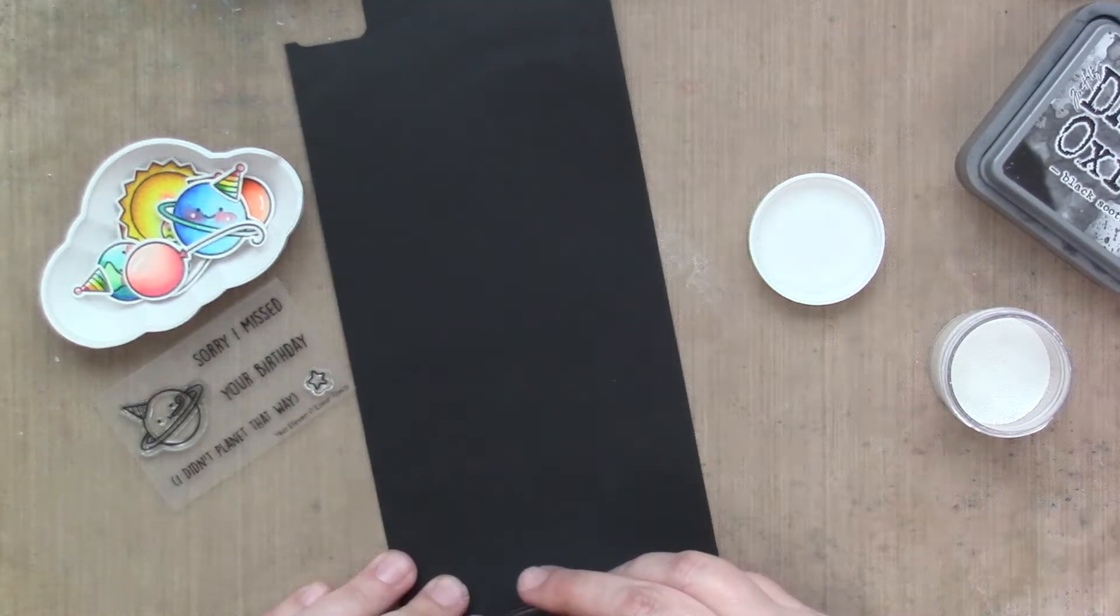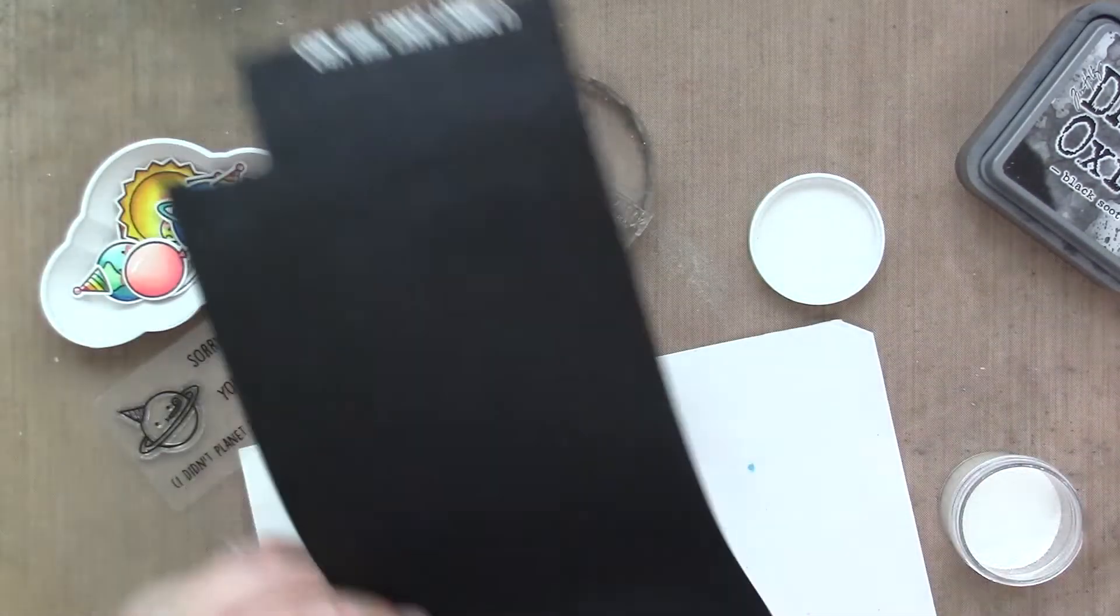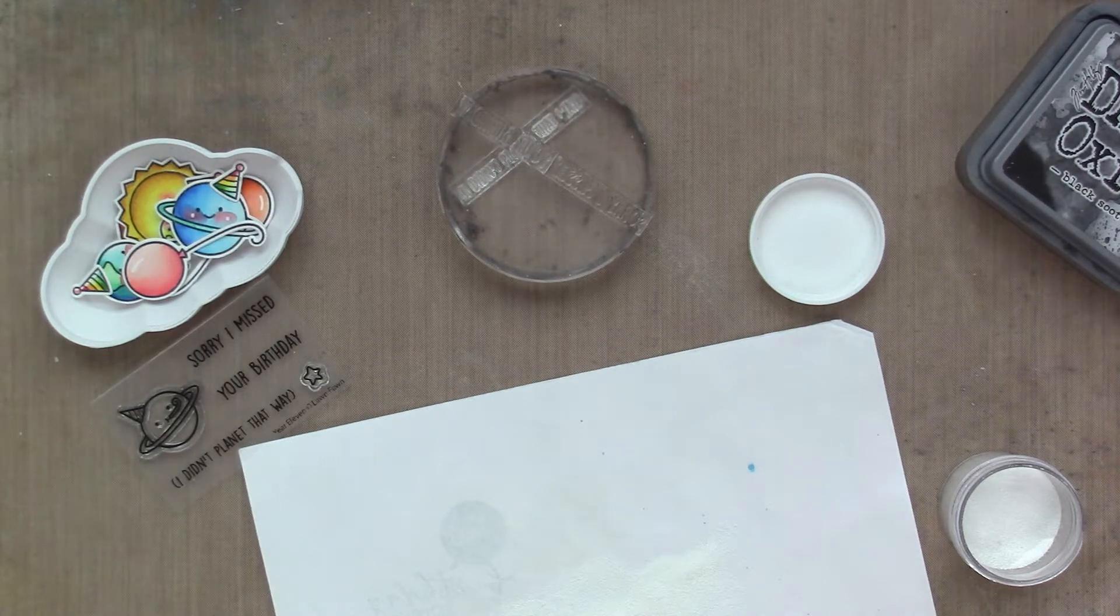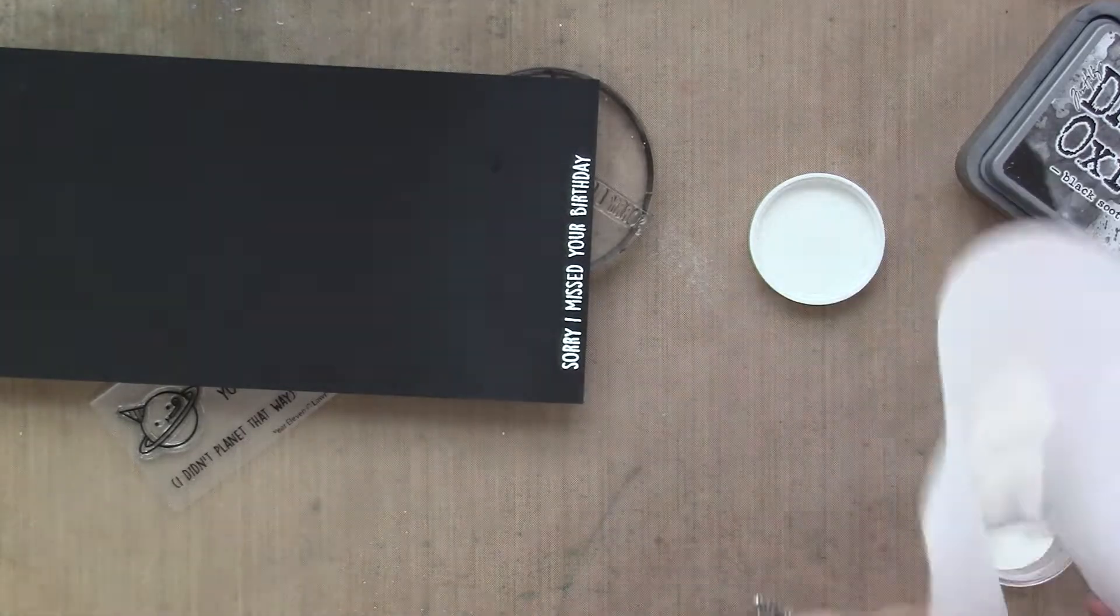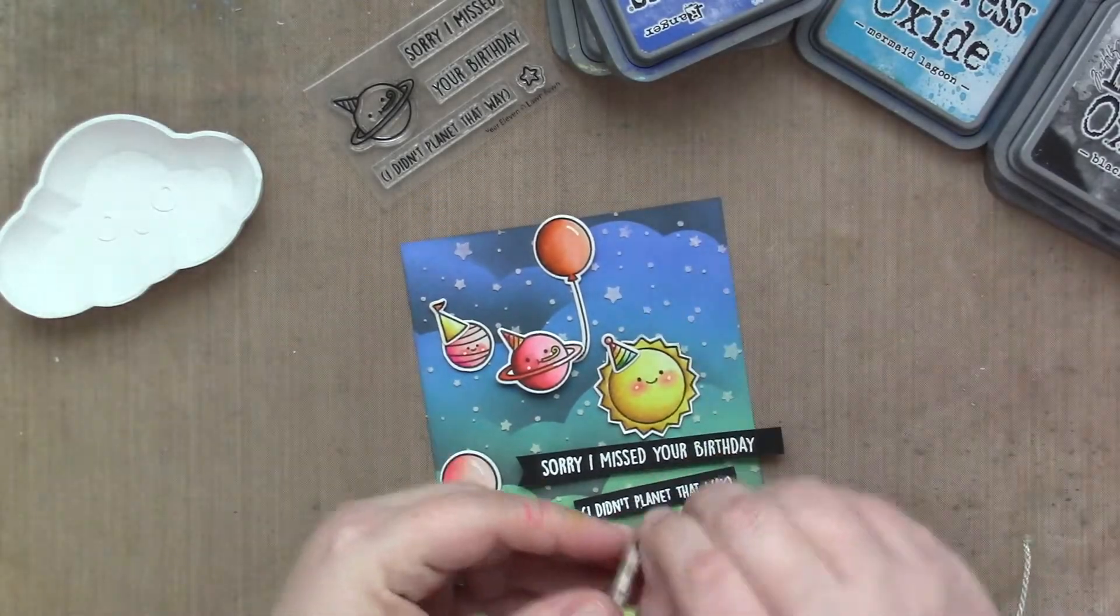And then I'm heat embossing the other part of the sentiment at the very tippy top. The reason I did this was because I cannot line things up straight. And so I just imagined myself trying to cut these out in a straight banner after I'd stamped them wonky. So I thought, if I can use both ends of the cardstock, I know I will have a straight surface.